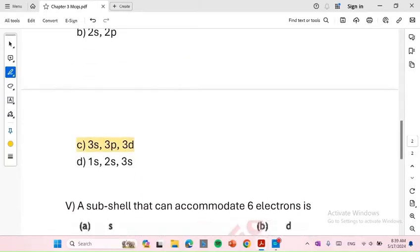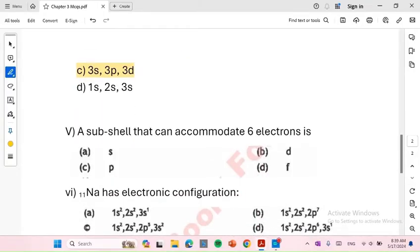3s, 3p, 3d. A subshell that can accommodate 6 electrons is P.